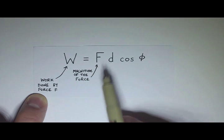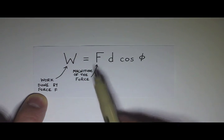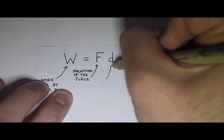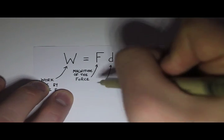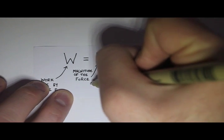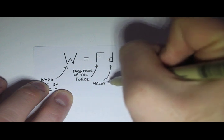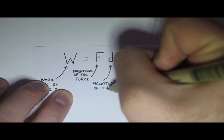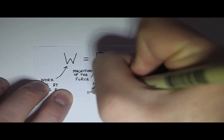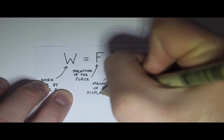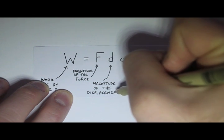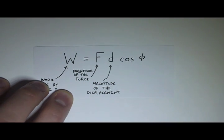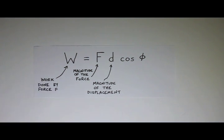And then D is the displacement, although I should also specify that it's the magnitude of the displacement. Again, displacement is a vector, and so we're talking about just the length of that vector, the magnitude. So that's the magnitude of the displacement. And then cosine, well that's cosine, you know what that is. And then last we have this angle phi.